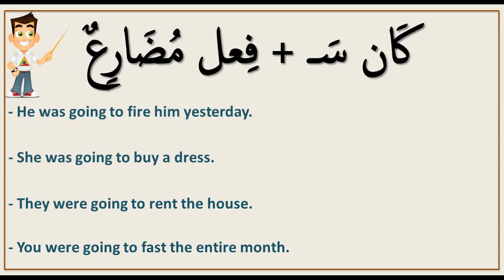From this sentence, you can guess the construction: كان + سا. We change كان depending on the pronoun — the Arabic pronoun. It won't always be كان. After it, you add a present tense verb — فعل مضارع.